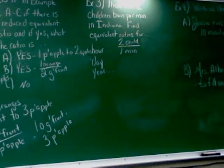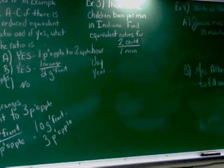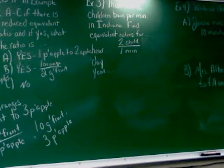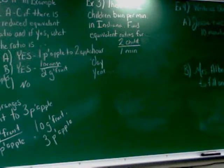Okay, next one. And I don't know if this is a real answer, real numbers. I just made it up. It could be right. I don't know. There are two children born per minute in Indiana. Find equivalent ratios for hour, day, and year. There are two children born per minute in Indiana. Find equivalent ratios for hour, day, and year.